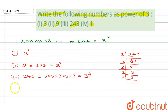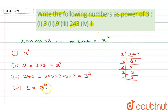Lastly, we have to represent the value one as a power of three. We know that if any number has a power of zero, then its value is equal to one. Using that property of exponents, one can be written as three power zero, since any number to the power zero equals one.